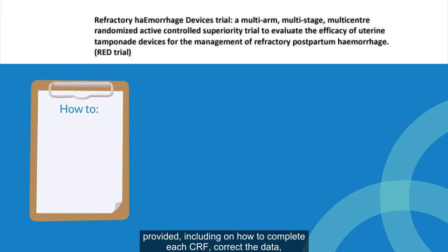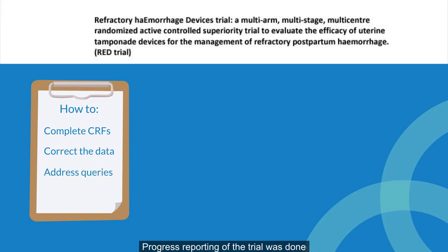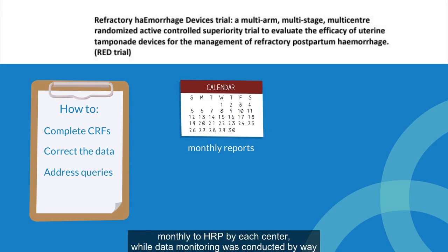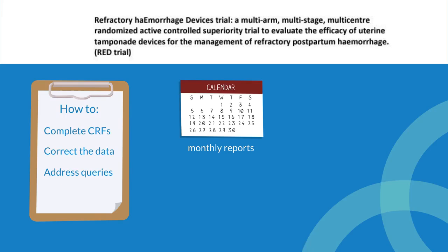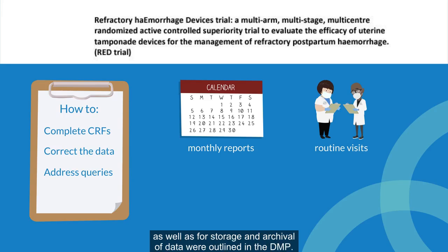Guidelines with instructions were provided, including on how to complete each CRF, correct the data entered in CRFs, and address queries raised in the OpenClinica system. Progress reporting of the trial was done monthly to HRP by each center, while data monitoring was conducted by way of routine visits by the HRP study team and/or external monitors. Finally, instructions for maintaining security and confidentiality, as well as for storage and archival of data, were outlined in the DMP.